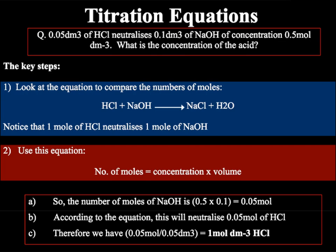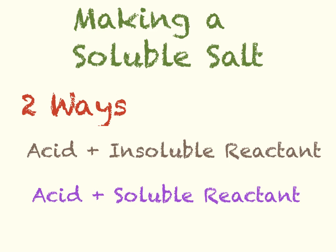We will now look at the final topic for today's video: preparing soluble salts. In order to make a soluble salt there are two methods you need to know. The first is using an acid and an insoluble reactant, and the second is using an acid and a soluble reactant. In both cases, these are neutralisation reactions.